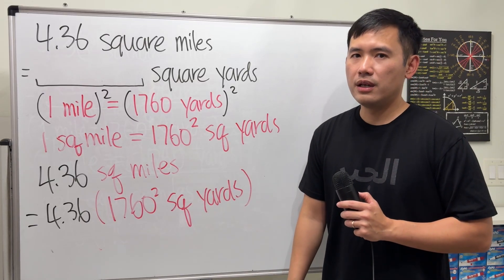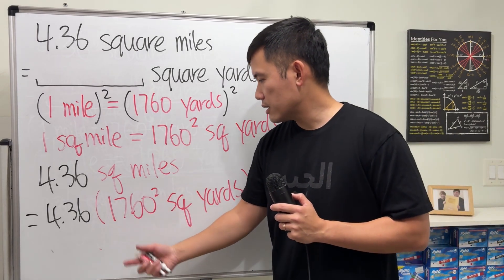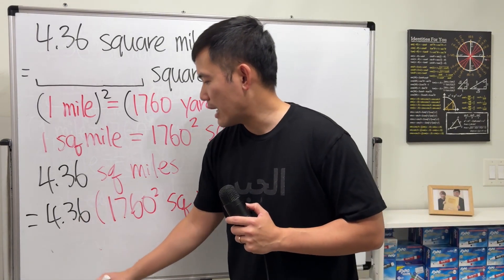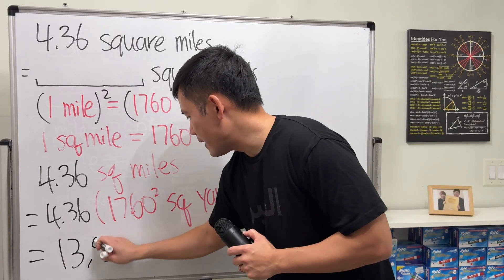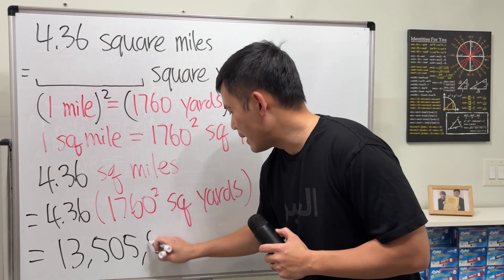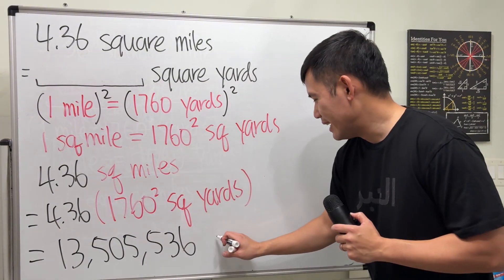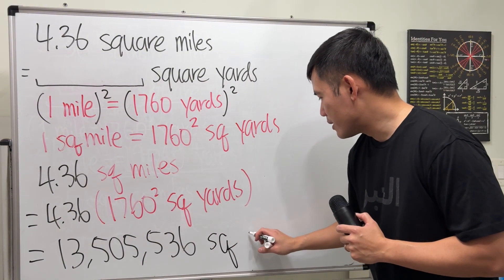And you can use the calculator on the SAT. So enter this on the calculator and then multiply by that. You will end up with 13,505,536 and then the unit for that is squared yards.